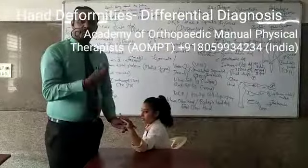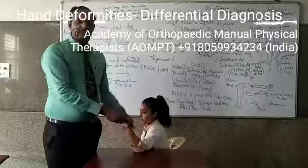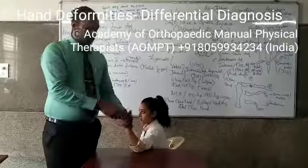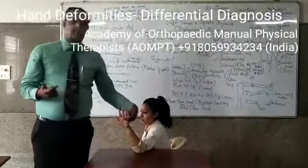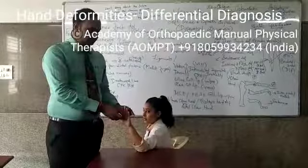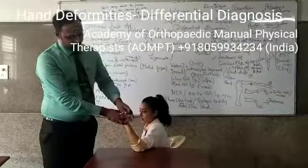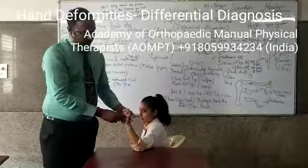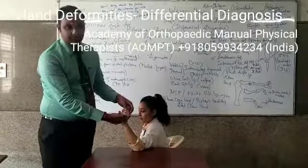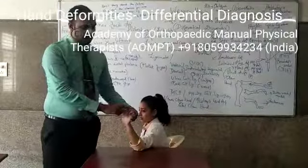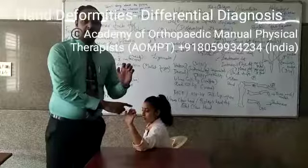Intrinsic plus happens in rheumatoid arthritis. In intrinsic minus, it is because of nerve injuries leading to paralysis or weakness of the intrinsic muscles. The opposite of intrinsic plus will come — the deformity is called intrinsic minus. What happens is the MCP gets into extension and the IP joints go into flexion. So MCP extended and IP joint flexed — you can see the claw deformity here. All four fingers going into an intrinsic minus position is called the total claw hand.